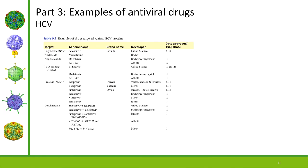We have many drugs targeted against hepatitis C. This table lists several — targets include the polymerase, with nucleoside analogs and non-nucleoside analogs. Non-nucleoside analogs bind somewhere other than the active site. We also have drugs against the protease — telaprevir is one — plus combination drugs in various trial phases. Hepatitis C virus is very much a success story.